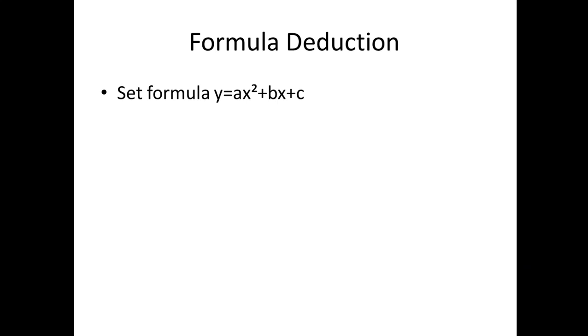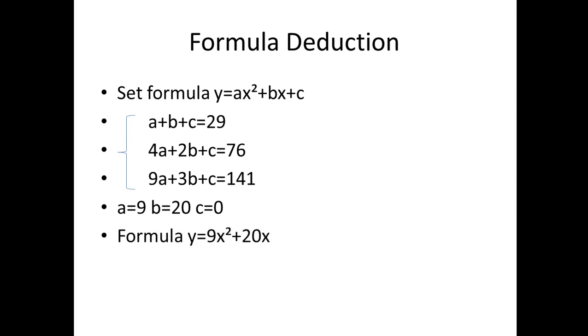You input each level and requirement numbers, and we get three equations. You can easily solve to get a equals 9, b equals 20, and c is 0.